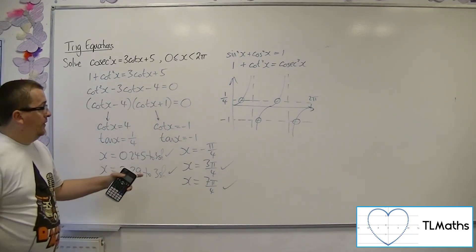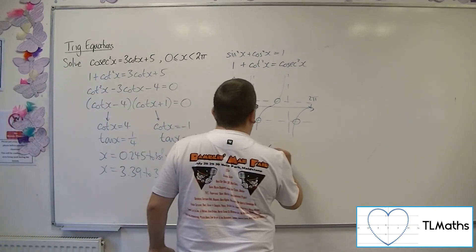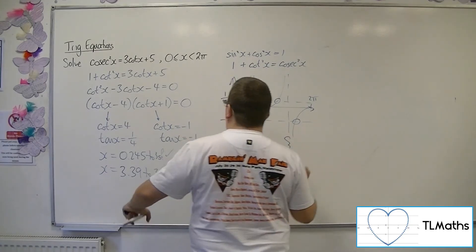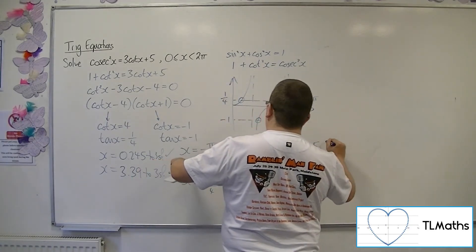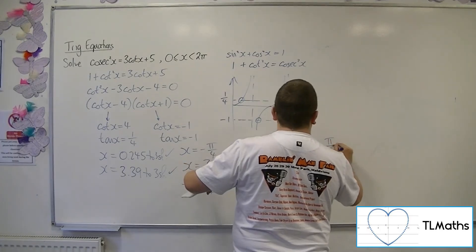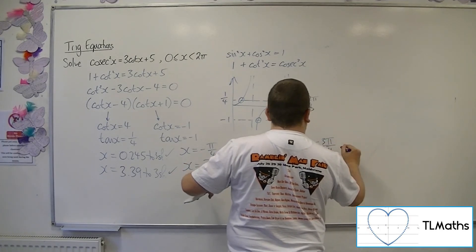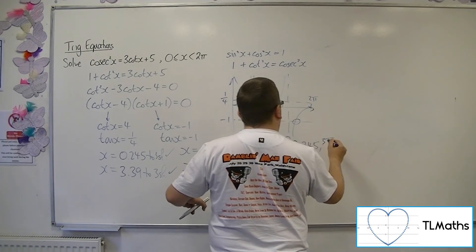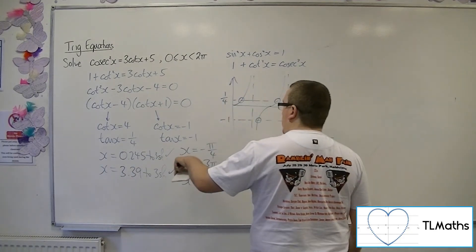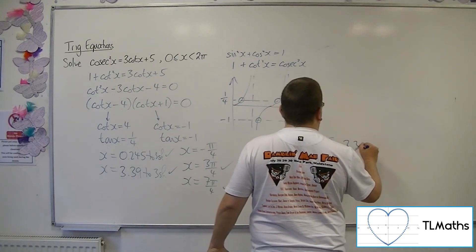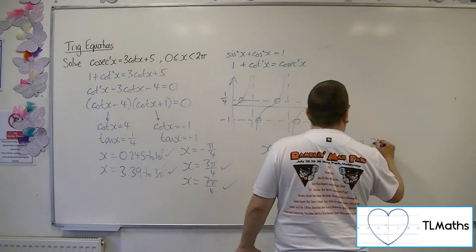So these are the four solutions to the original problem. So in order of size, I've got 0.245, then 3 pi over 4. Then I've got 3.39 to 3 sig fig, and 7 pi over 4.